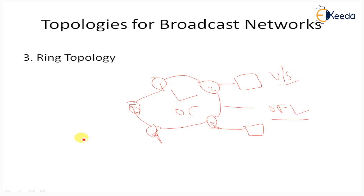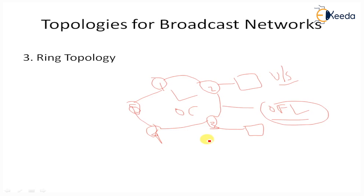In ring topology, each single node is joined to its neighboring node, forming a closed path in a circular arrangement — node one to two, two to three, up to five, and five connects back to one. Information is transmitted in the form of light along the optical fiber lines from one node to another. Optical couplers are installed to couple the transmitted optical signal from one node to the next.